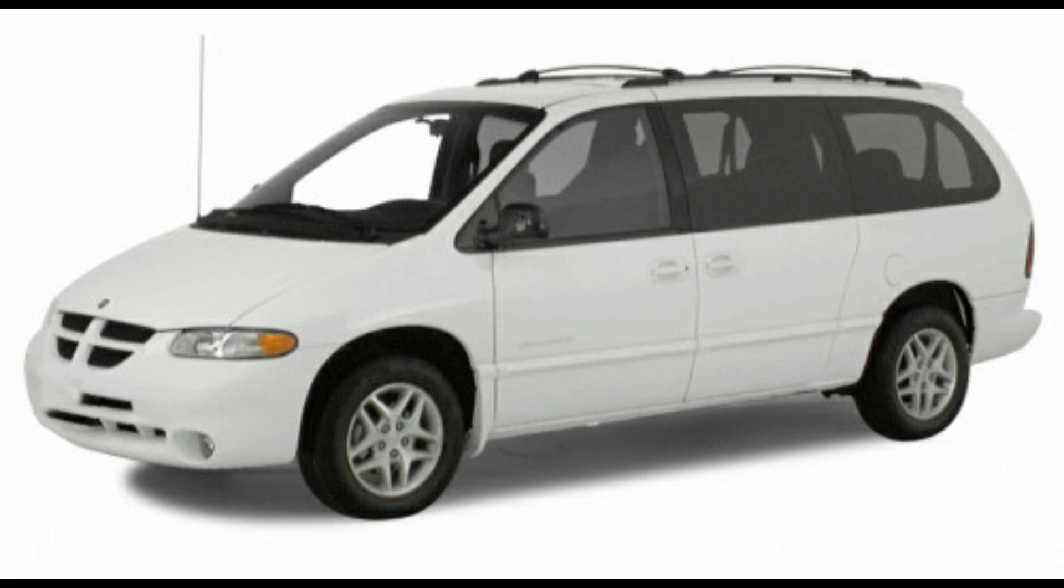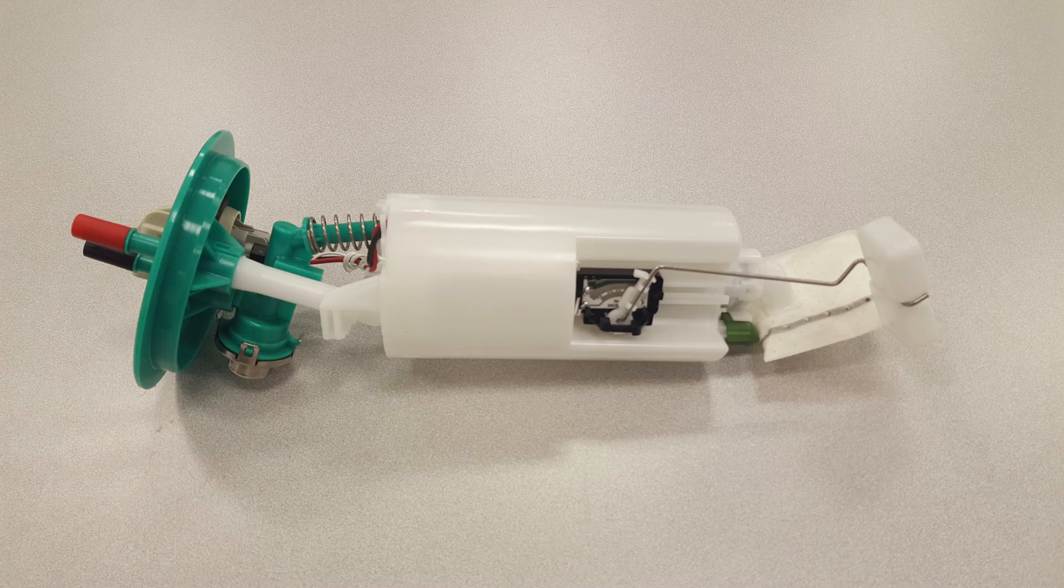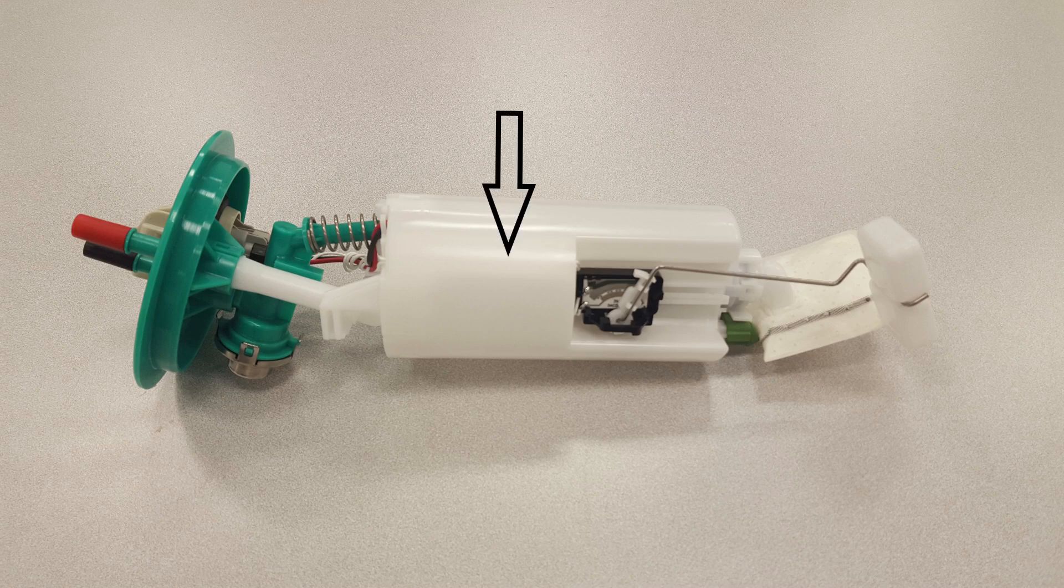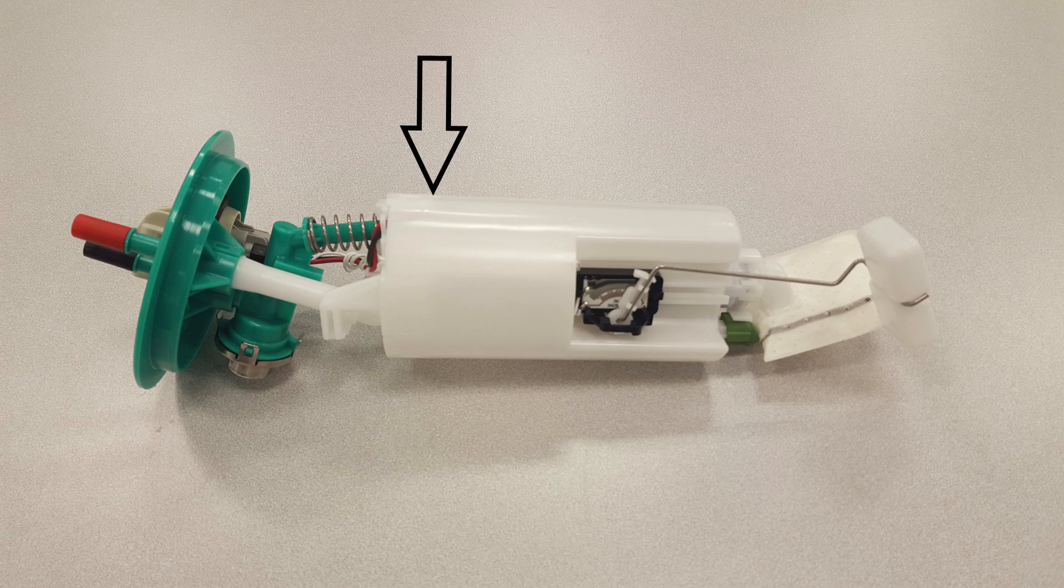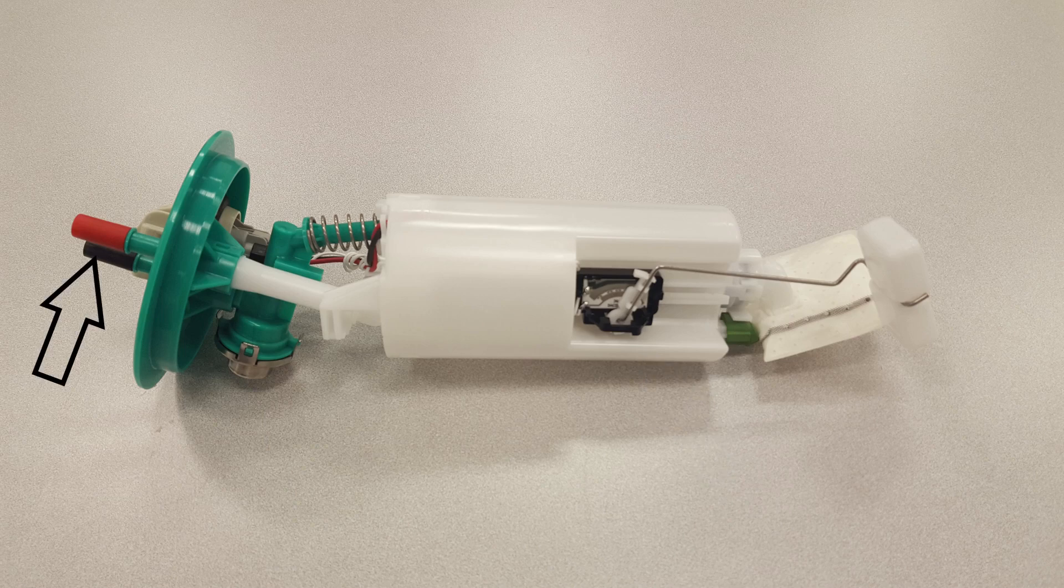This pump is specifically made for the 2000 Dodge Grand Caravan with a 3.3 liter engine. The fuel pump module contains the following: an electric fuel pump, the fuel pump reservoir, the inlet strainer, the fuel pressure regulator, the fuel gauge sending unit, and the fuel supply line connection.